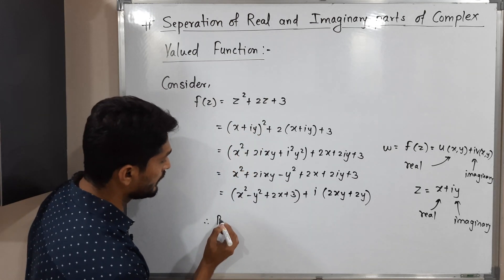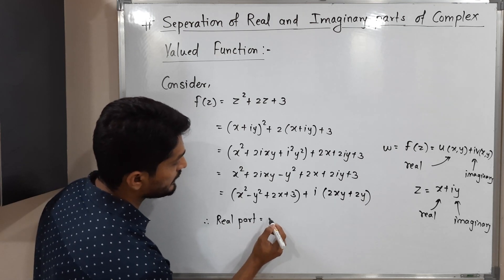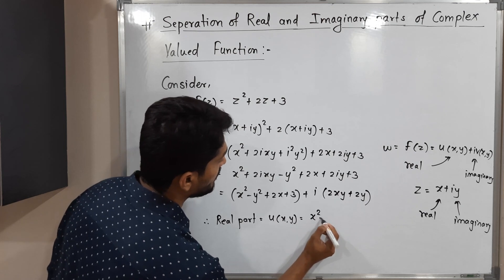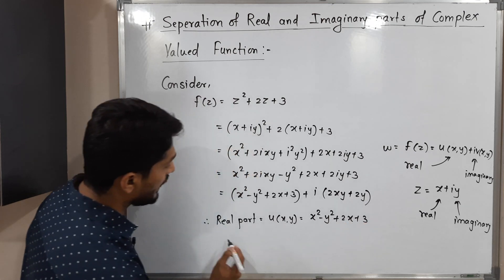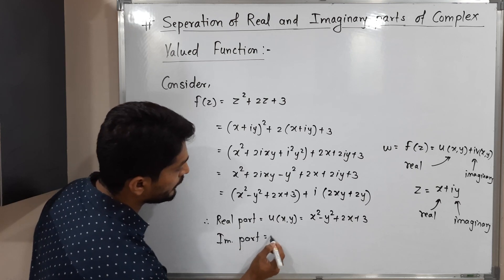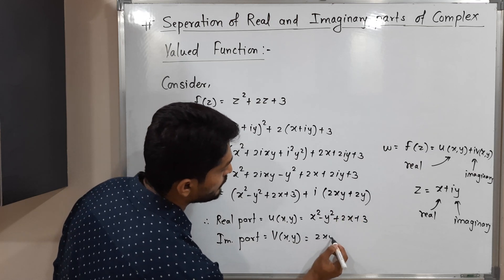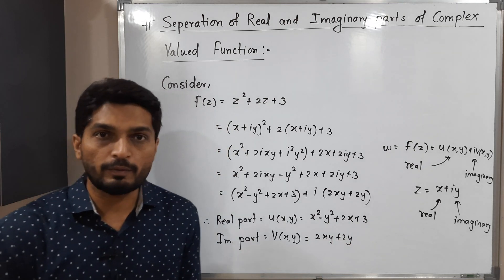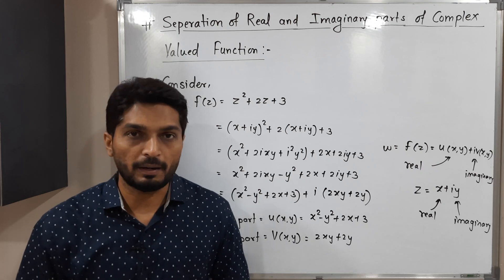Therefore, the real part of this complex valued function, denoted by u, is: u(x,y) = x squared minus y squared plus 2x plus 3. And the imaginary part, denoted by v, is: v(x,y) = 2xy plus 2. In this way, when we have any complex valued function, we can always find its real part and imaginary part.